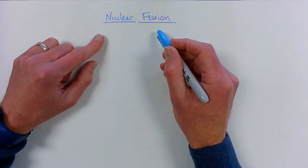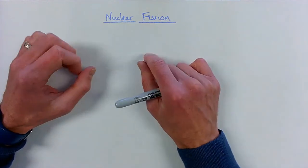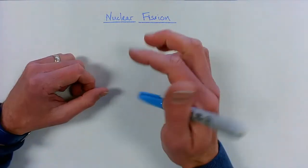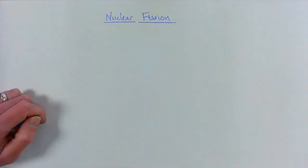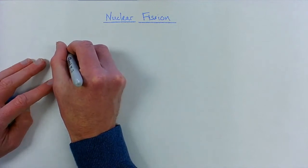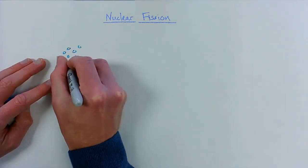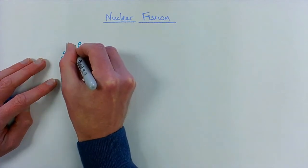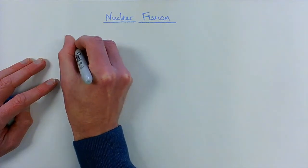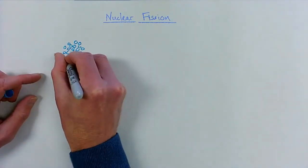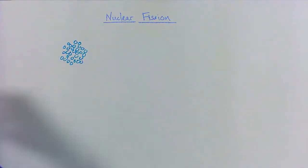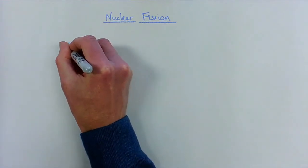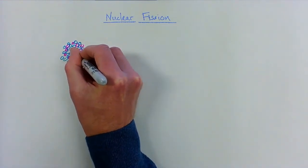Nuclear fission is the splitting of large unstable nuclei into smaller nuclei. Let's think about an example starting with uranium. Uranium has a large nucleus. If I make these represent the neutrons and these purple ones as the protons, here is a large uranium nucleus.